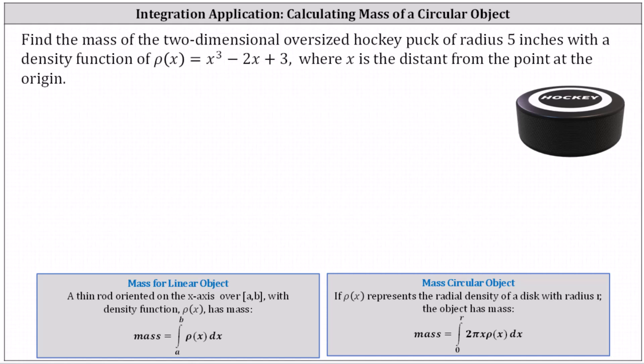Looking at our notes below, if ρ(x) represents the radial density of a disk with radius r, the object has mass given by the definite integral from zero to r of 2πx times ρ(x) dx.